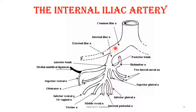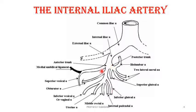The internal iliac is one of the two branches of the common iliac artery at the level of the sacroiliac joint, which divides into the external iliac — which continues to become the femoral artery of the lower limb — and the internal iliac artery, which is a short trunk running downwards and backwards along the anterior border of the greater sciatic notch to reach the ischial spine, where it ends by dividing into a posterior division and an anterior division.